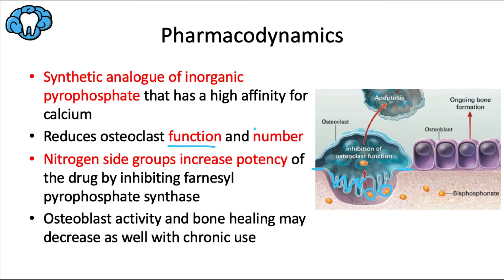Bisphosphonates also decrease the development and recruitment of osteoclasts and promote their apoptosis — so it reduces their number. Perhaps its main function is to induce apoptosis of these cells. The nitrogen side groups increase the potency of the drug by inhibiting farnesyl pyrophosphate synthase, an enzyme crucial to the production of cholesterol and lipids. When given long term, osteoclast activity decreases significantly, but osteoblast activity may also decrease due to the coupling effect through intracellular mediators. Ironically, prolonged high doses can contribute to impaired bone healing due to decreased bone and capillary formation — known as angiogenesis.